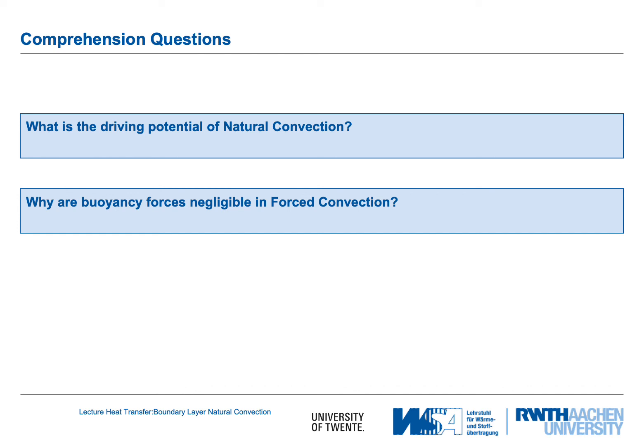Now for some comprehension questions. The first: what is the driving potential of natural convection? It is the density differences caused by changes in temperature. The second: why are buoyancy forces negligible in forced convection? Because the velocities are usually much larger and the Reynolds number is thus large. This concludes lecture number three. Thank you for your attention.